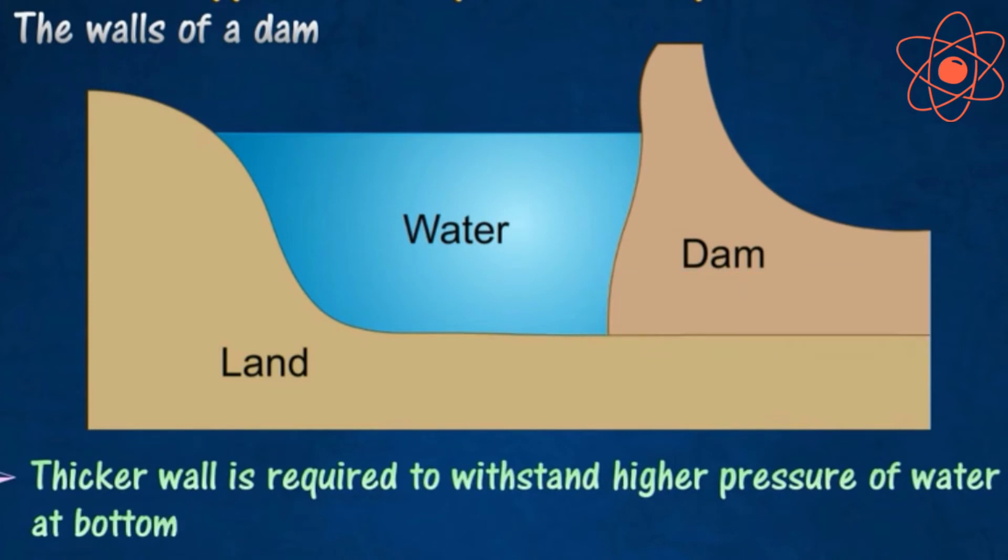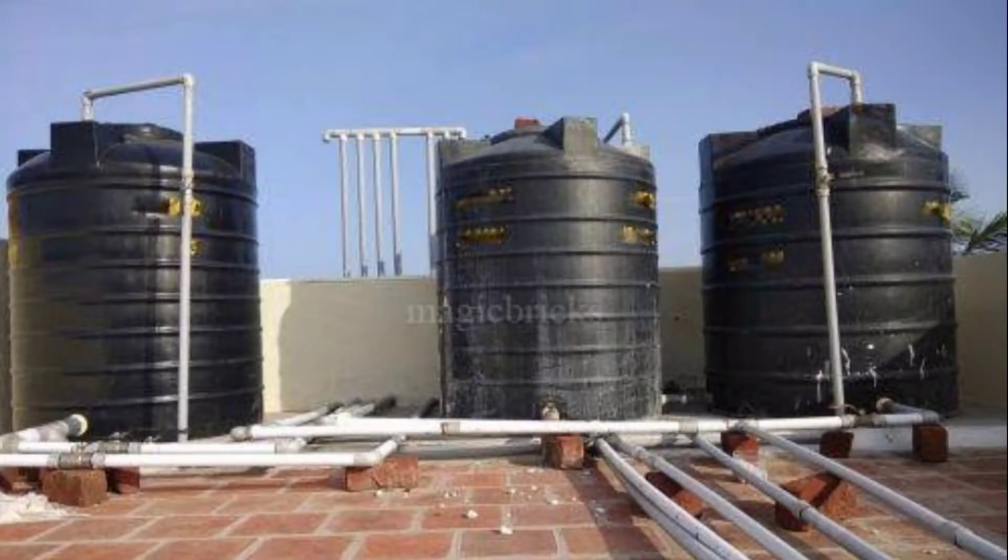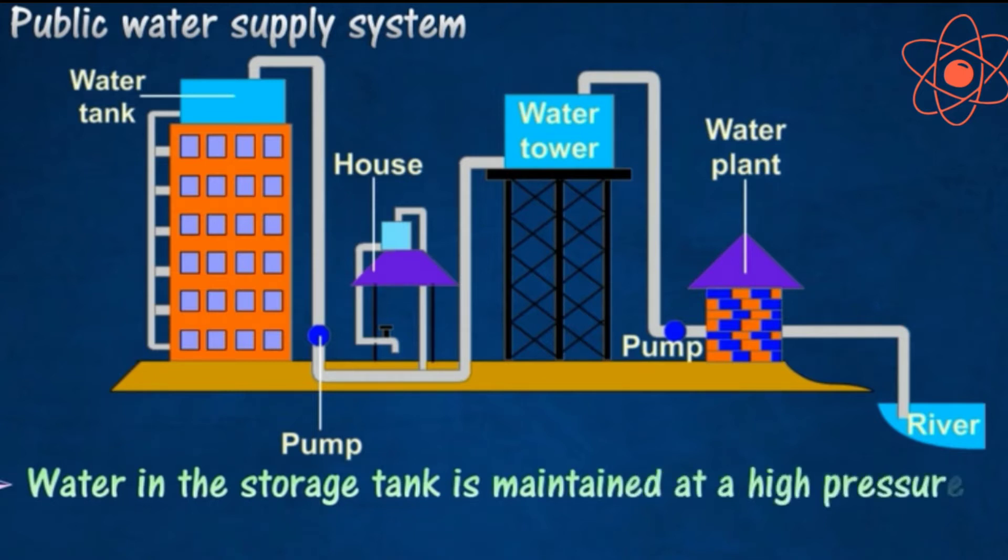Next, water supply tanks are placed at a high place in the building. The water supply tanks are placed generally on the terrace or top of the buildings. This is because as the tanks are placed at a greater height, the pressure of water will be large enough to force the water to reach the taps of the houses.